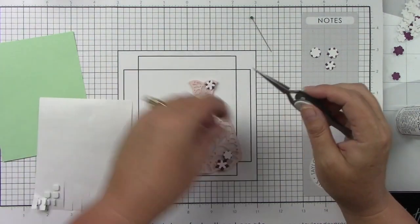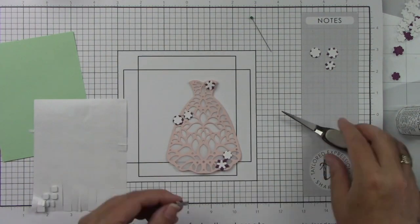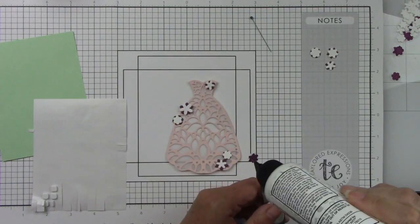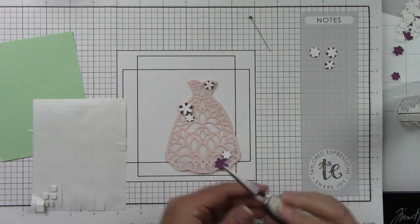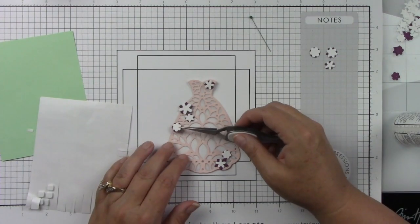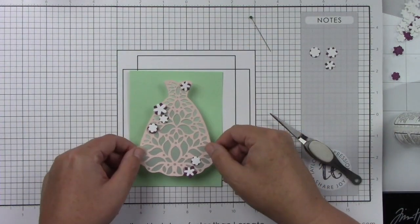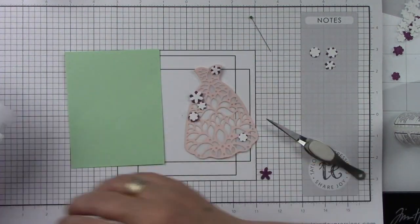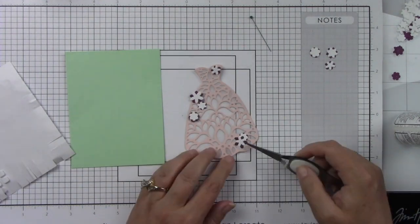Now I'm going to add the flowers to this. I will pop some of these up with some foam tape. This is the 3D foam squares and they have a fairly low profile. And then a couple of the flowers will just be adhered directly to the dress, but isn't that so pretty? That little pop of Passion Fruit against that Rose Water I think is just eye-catching.